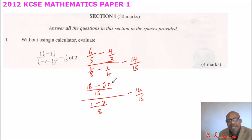So 18 minus 20, that will give you minus 2 over 15. And then we have, you divide. This is 1 minus 2, it's minus 1. Divide by 8. And you minus 14 over 15.